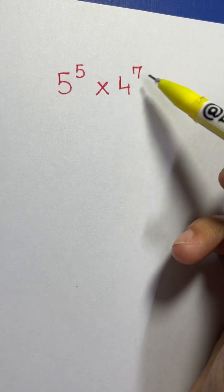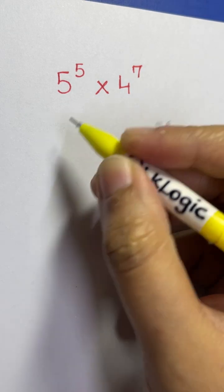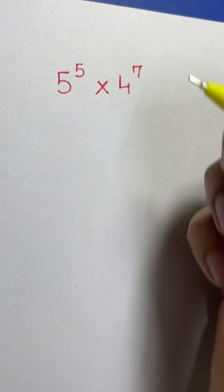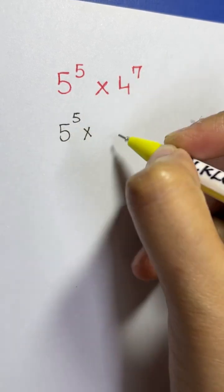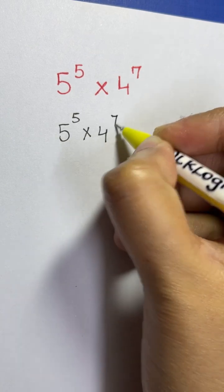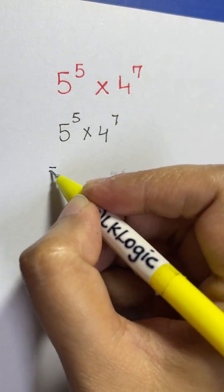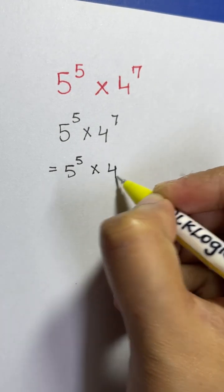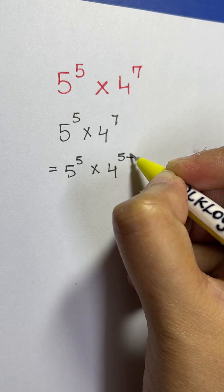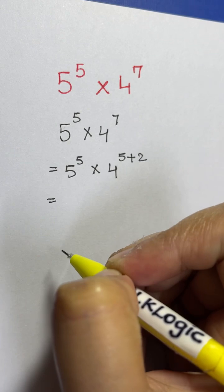So there are two steps: we need to separate 7 into 5 plus 2, and we need to form a relationship between 5 and 4. Starting with the first step: write 5 to the power of 5 times 4 to the power of 7, and break down 7 as 5 plus 2, giving us 5⁵ times 4^(5+2).